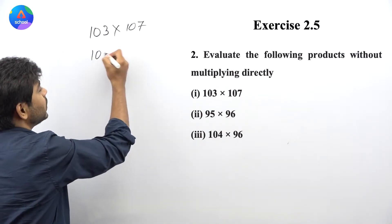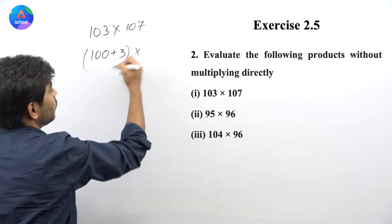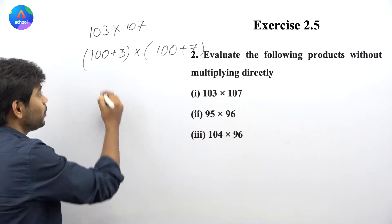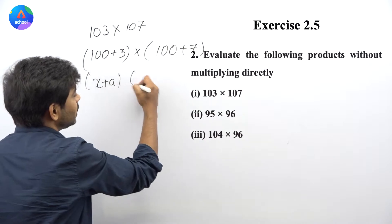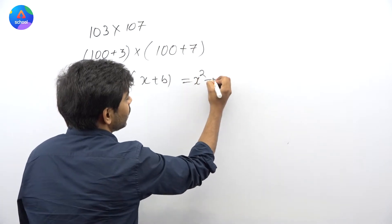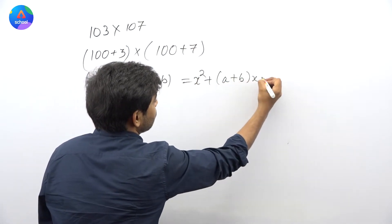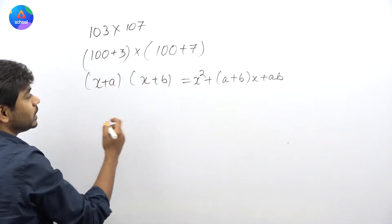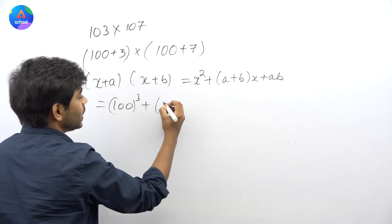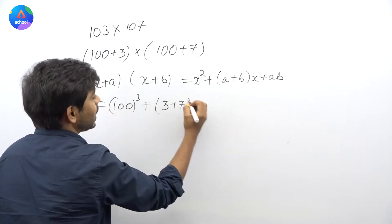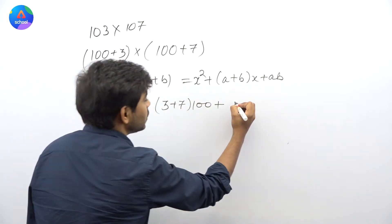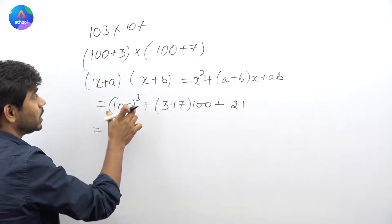देखिए, 103 को मैं 100 + 3 लिख सकता हूं और 107 को मैं 100 + 7 लिख सकता हूं। यह (x+a)(x+b) का format बन जाता है। तो यहाँ पर हो जाएगा: 100 का square, plus (a+b) यानि कि 3 + 7, into x जिसकी value 100 है, plus ab यानि 3 × 7 = 21.